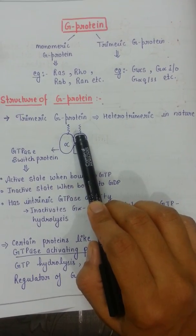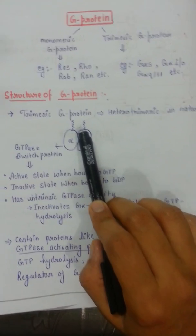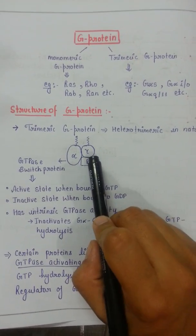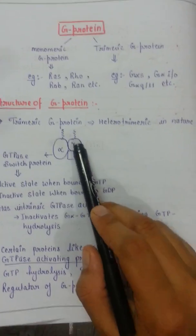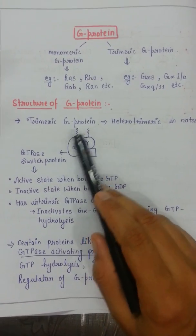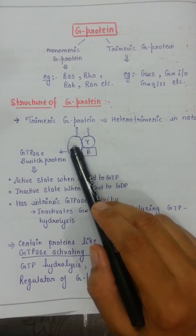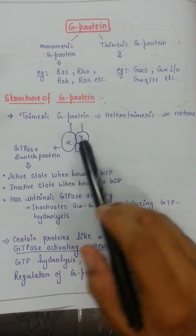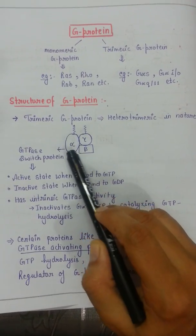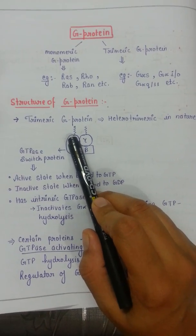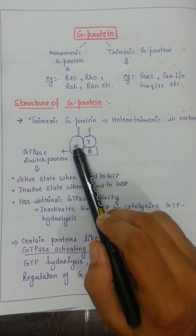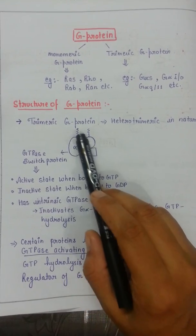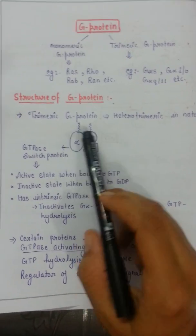The trimeric G-protein is basically a heterotrimer because it has three different subunits: alpha, beta, and gamma. The alpha and gamma subunits are covalently linked to the plasma membrane lipid bilayer. The beta and gamma subunits form a dimer, because the alpha subunit will ultimately detach from this dimer and interact with the effector after receiving the signal.